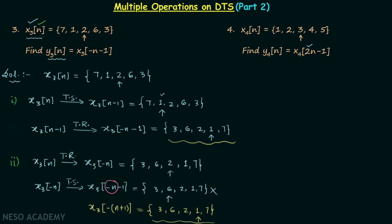In example 4, we have x4n equal to 1, 2, 3, 4, 5, where 3 is the value of the signal when n is equal to 0. We need to find y4n which is equal to x4(2n-1). There are two operations here: time scaling and time shifting.